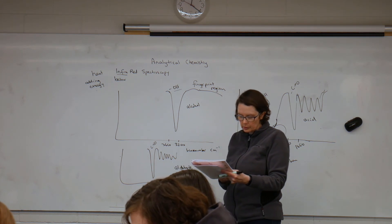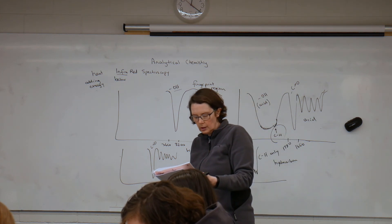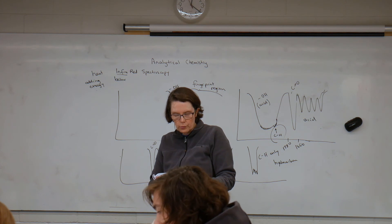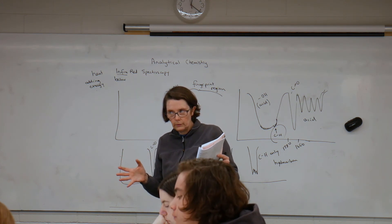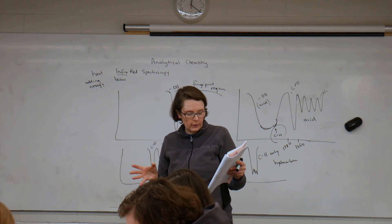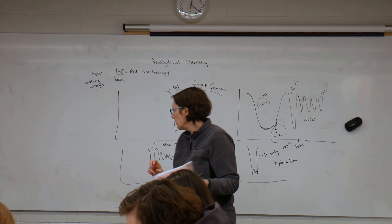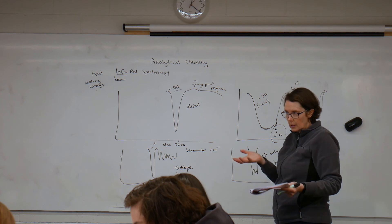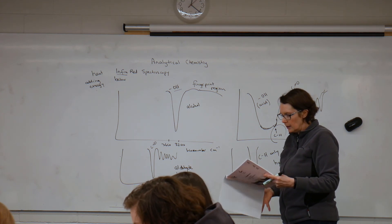And the third example is the propanoic acid, where we've got the carbonyl absorption. We've got a broad absorption for the hydroxyl of an acid, but you can see it's got that jagged kind of end on it because the carbon hydrogen bonds are absorbing in that same region.